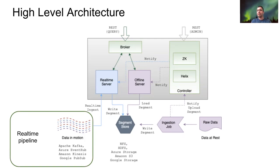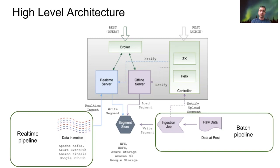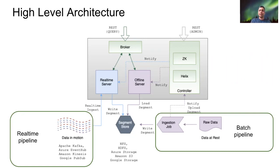You could also use Pinot as part of your batch pipeline, where the raw data is sitting somewhere in HDFS or S3, and we run an ingestion job to bulk load that data into Pinot. The system supports Lambda architecture, so the cool thing here is you can run both these pipelines for the same table, and it will be presented as one unified view to the user, which is pretty convenient.